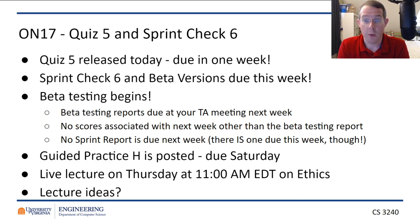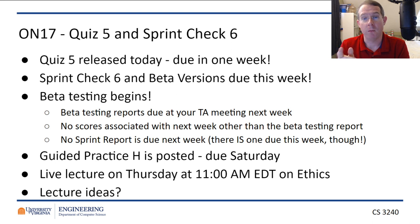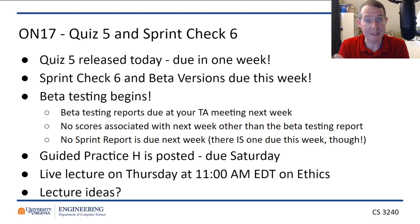Next week, the week of the 20th, when you meet with your TAs, you'll talk about your beta testing results and come up with a plan of what you should be working on between then and when you demo the app to me the next week for your final score, the week of the 27th. There is no Scrum report due next week, but there is one due this week for Sprint Check 6 — this is the final Scrum report, so make sure you still do that.